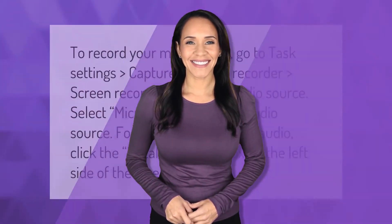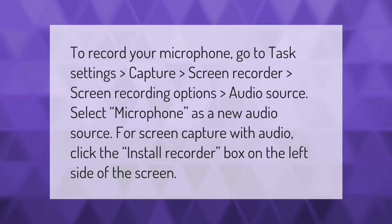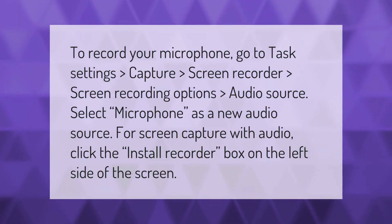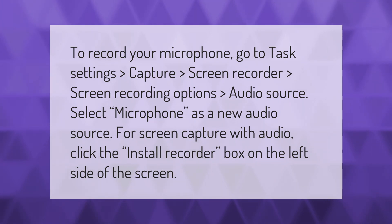To record your microphone, go to task settings, then capture screen recorder, then screen recording options, audio source, and select microphone as a new audio source for screen capture with audio. Click the install recorder box on the left side of the screen.